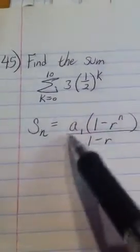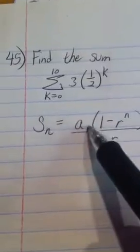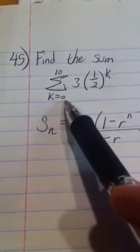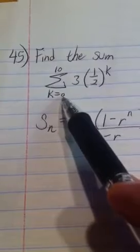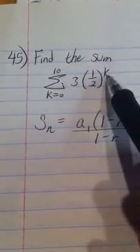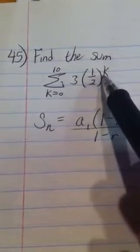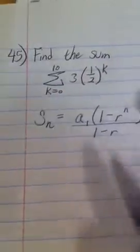So I need my first term, and the safest way to get the first term is to plug in the first thing down here. So if I plug in k is 0, then anything to the 0 is 1 times 3 is 3. So my a sub 1 is 3.